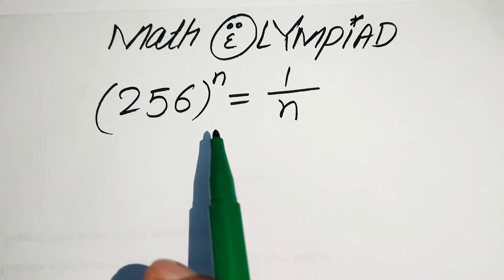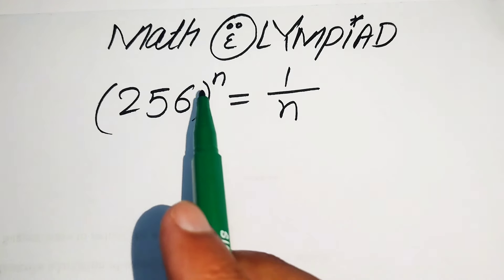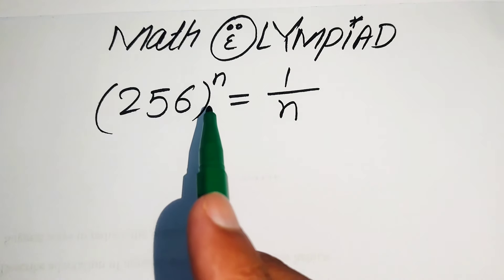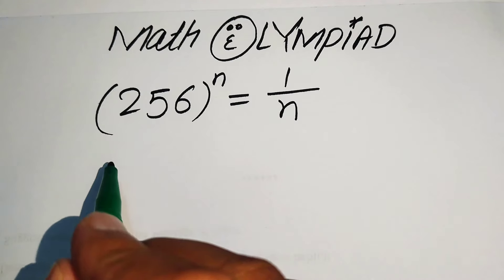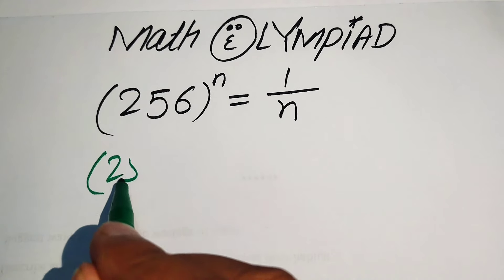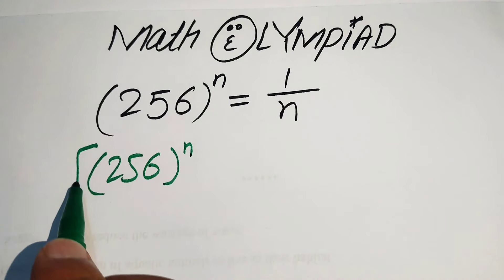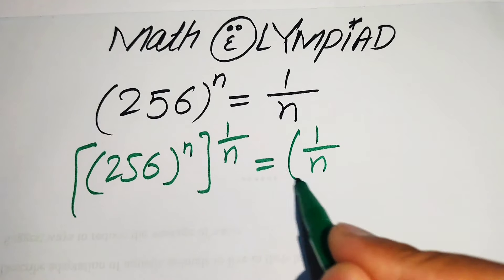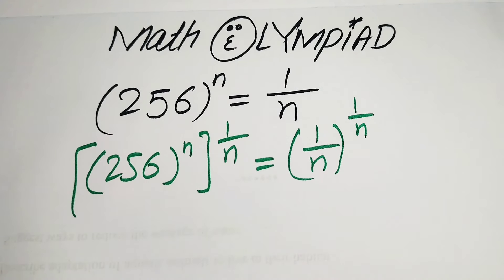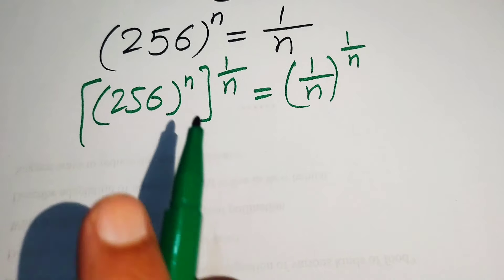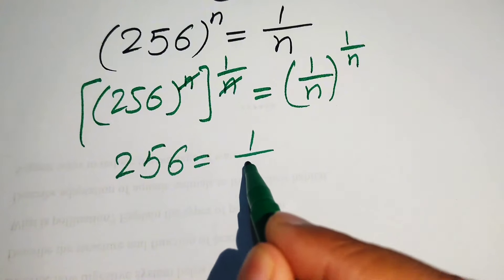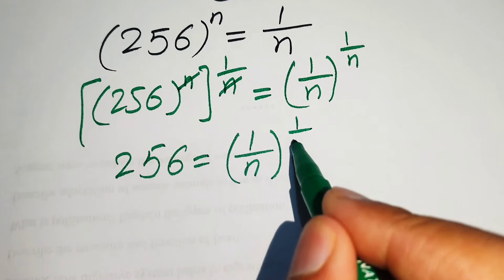The first step is to remove the variable n from the left-hand side, so we take the nth root on both sides. When we take the nth root on both sides, it is written as 256 raised to the power n, and its nth root on the left, and similarly the nth root on the right-hand side. By using the exponential law, the exponents cancel out, giving us 256 equals 1 over n, raised to the power 1 over n.